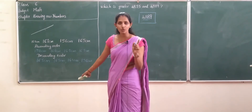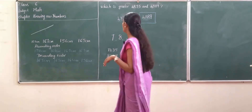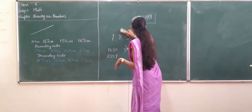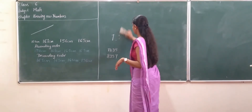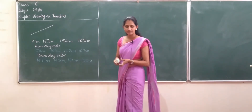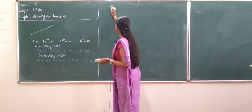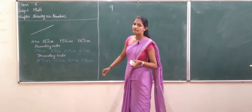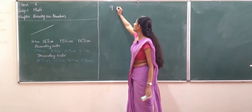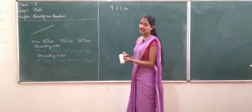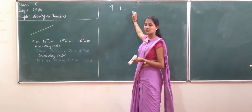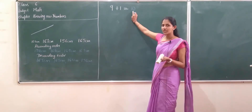You have to do the activity I gave. Now, what is the greatest single-digit number? Correct — that is 9. When I add 1 to the greatest single-digit number, I will get the smallest 2-digit number.